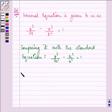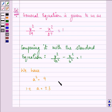So, we have the value of a square as 9, that means a is equal to plus minus 3. And, value of b square is equal to 27, that means, we have b as plus minus 3 root 3.